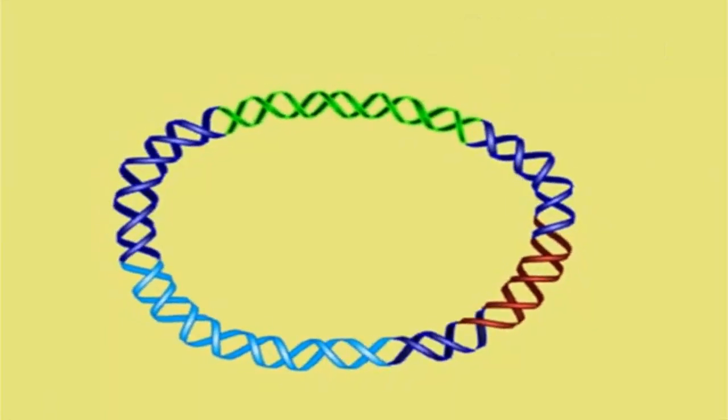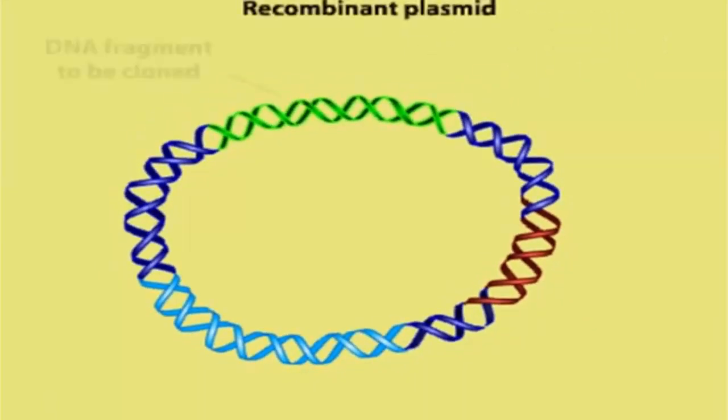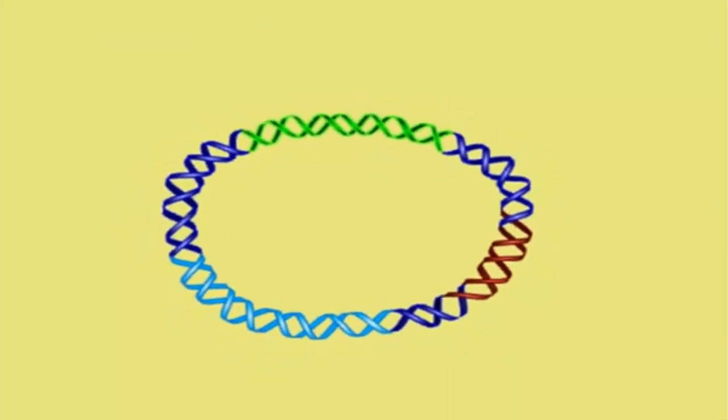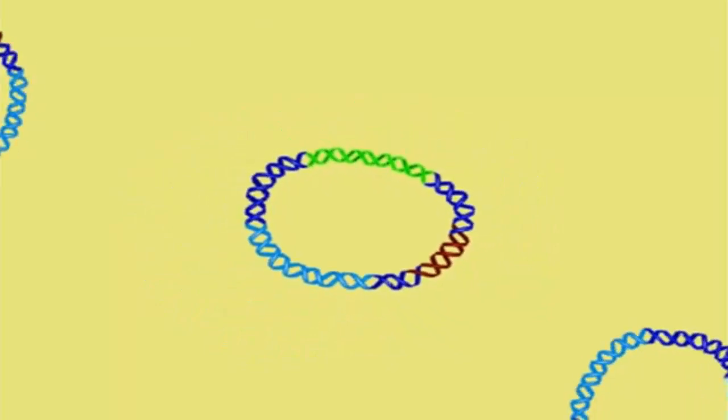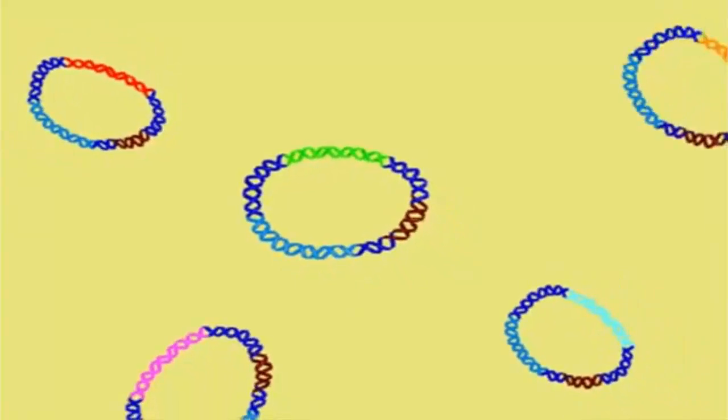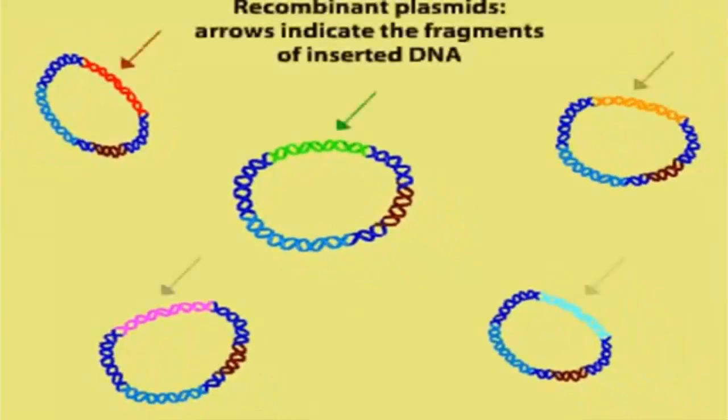Each of these recombinant plasmids contains the inserted DNA fragment, an ampicillin resistance gene, and a replication origin. A pool or library of circular recombinant plasmids is thus created. Each plasmid carries a unique fragment of foreign DNA, as indicated by the colored arrows.